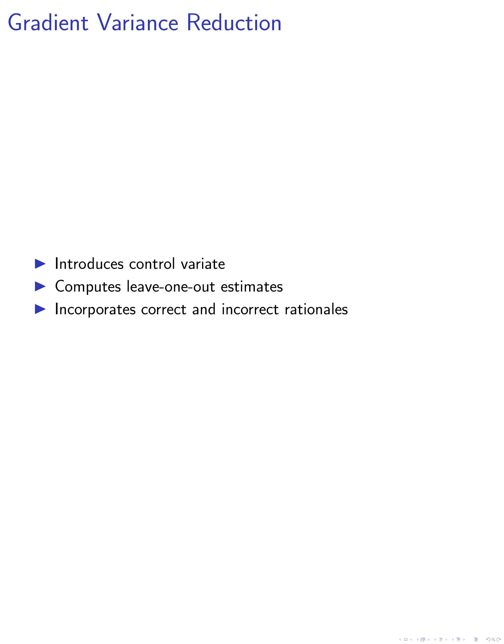To reduce the variance of the gradient estimator, we introduce a control variate. This involves computing leave-one-out estimates of the average probability of accepting a new rationale and subtracting a scaled control variate from the gradient estimate. This control variate allows us to incorporate both correct and incorrect rationales in the gradient estimation, depending on their weights.